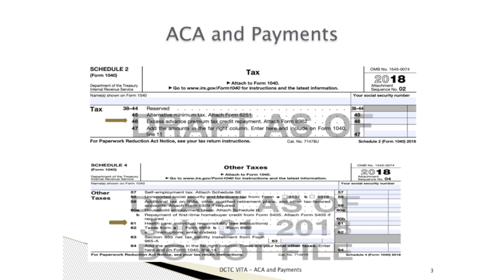Looking at Schedule 4, line 57 represents our total self-employment tax, already covered in our business income section. Line 59 represents the additional tax on IRAs and other qualified retirement plans, already covered. Line 60 is not our VITA client line. Line 61 is our health care individual responsibility, which I'll cover in this segment as part of the ACA laws. Lines 62 and 63 are not our VITA client lines. Line 64 represents the total of Schedule 4, carried to line 14 of the Form 1040.